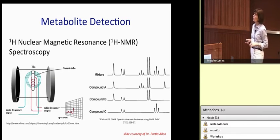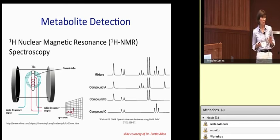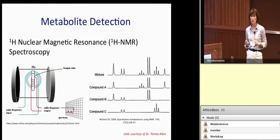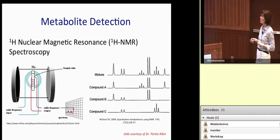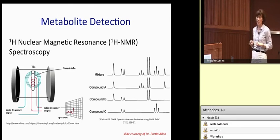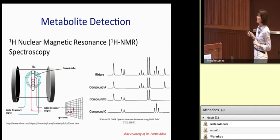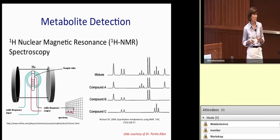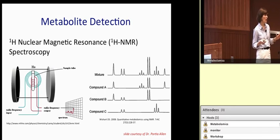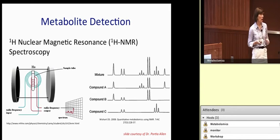Just a little review about the principle of how NMR metabolomics works. Historically, NMR has been used for single compound work. The idea behind using NMR for metabolomics is that proton NMR — every hydrogen-containing compound has a unique NMR signature. In a mixture of compounds, we can identify the individual compounds within that mixture, which really allows us to identify a number of different compounds as well as quantify them.